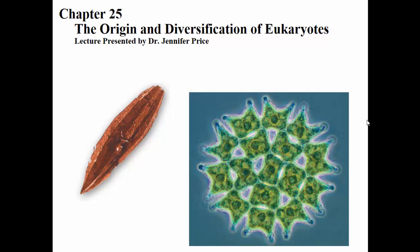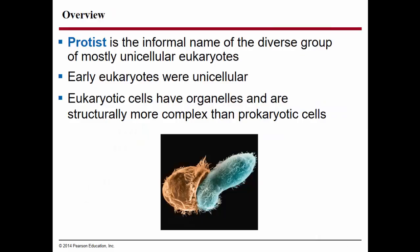Now that we've explored the prokaryotes, the simplest types of cells, we'll now discuss how the first and earliest eukaryotes arose. In this chapter we'll be exploring some simple types of eukaryotes. The term protist is the informal name given to the diverse group of eukaryotes that are mostly unicellular. Protist is a very diverse and wide group that's now considered to be too diverse to be included in a single kingdom.